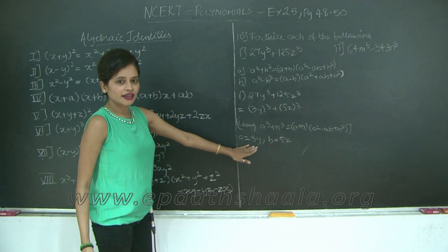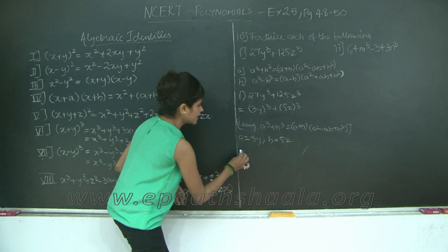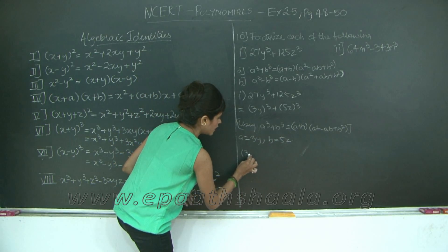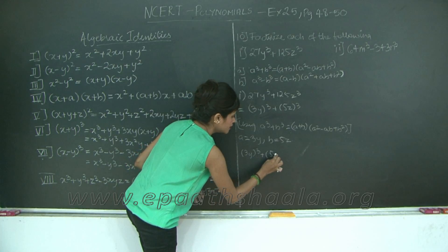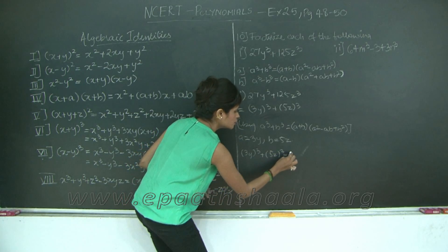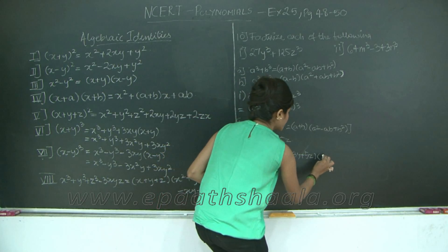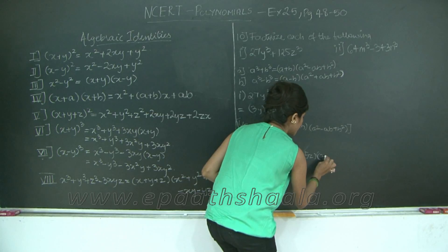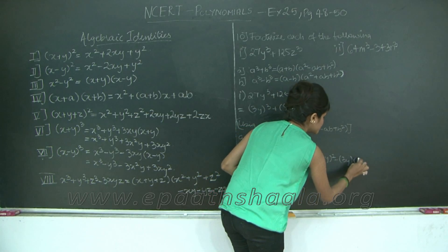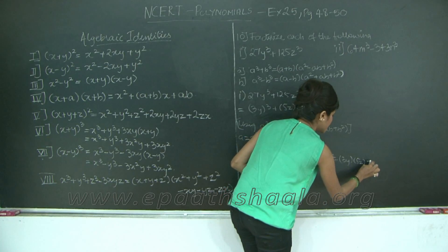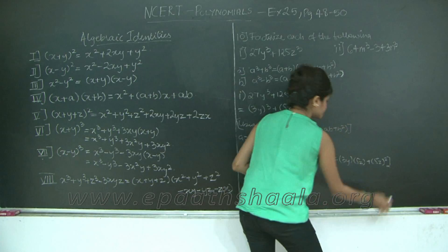Let us substitute a equal to 3y and b equal to 5z in our expression. We get 3y the whole cube plus 5z the whole cube is equal to 3y plus 5z into 3y the whole square minus 3y into 5z plus 5z the whole square.